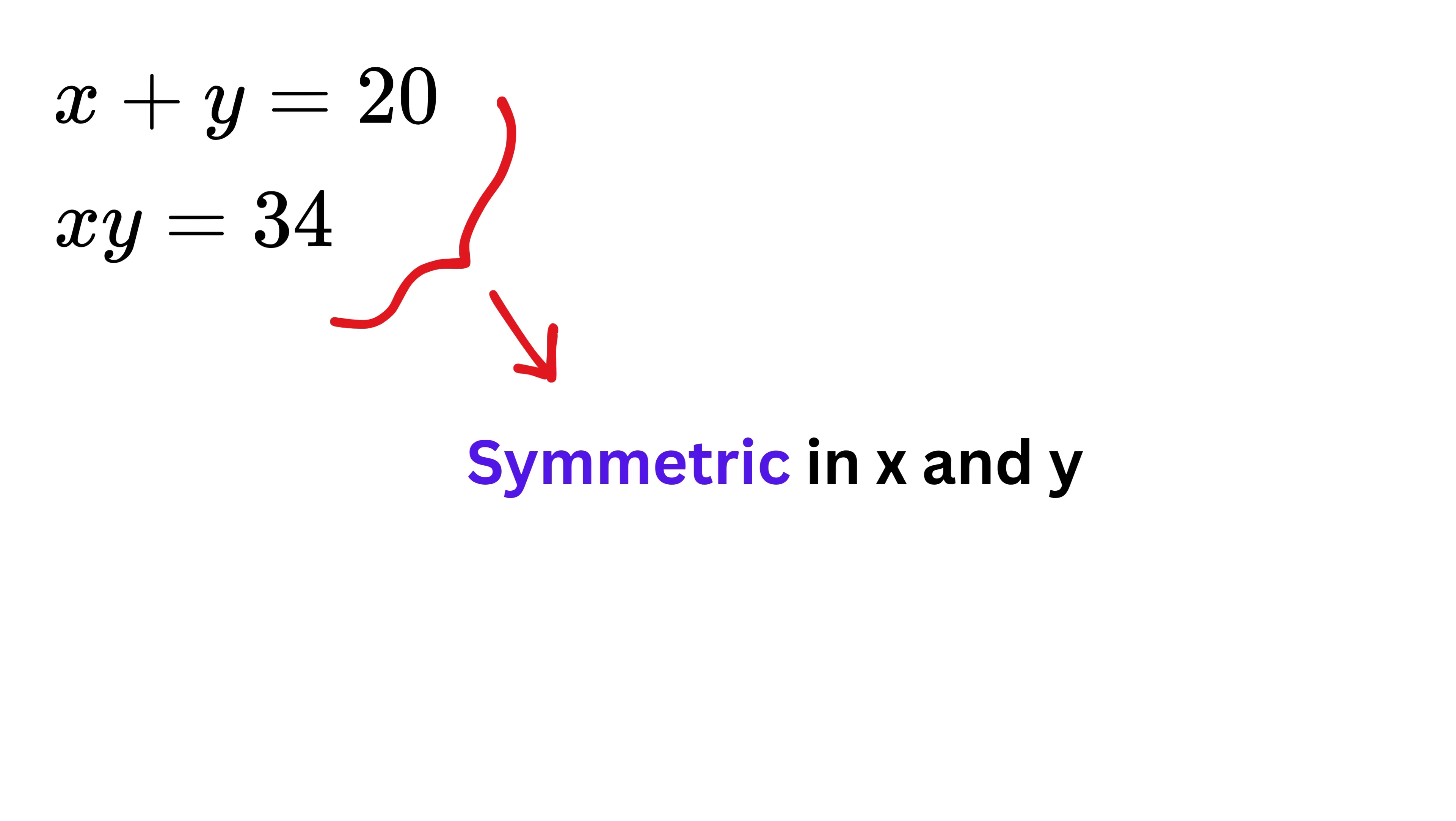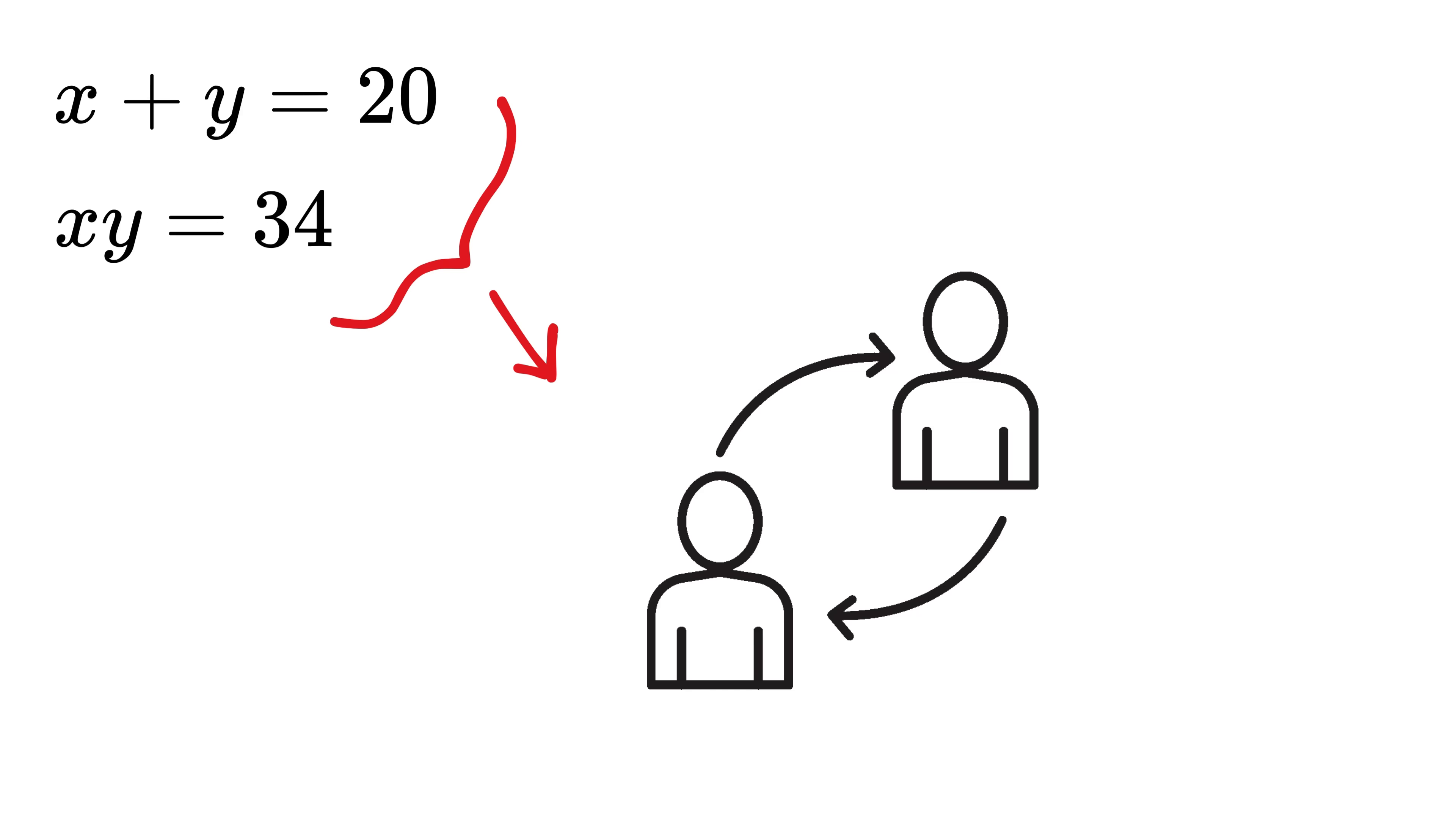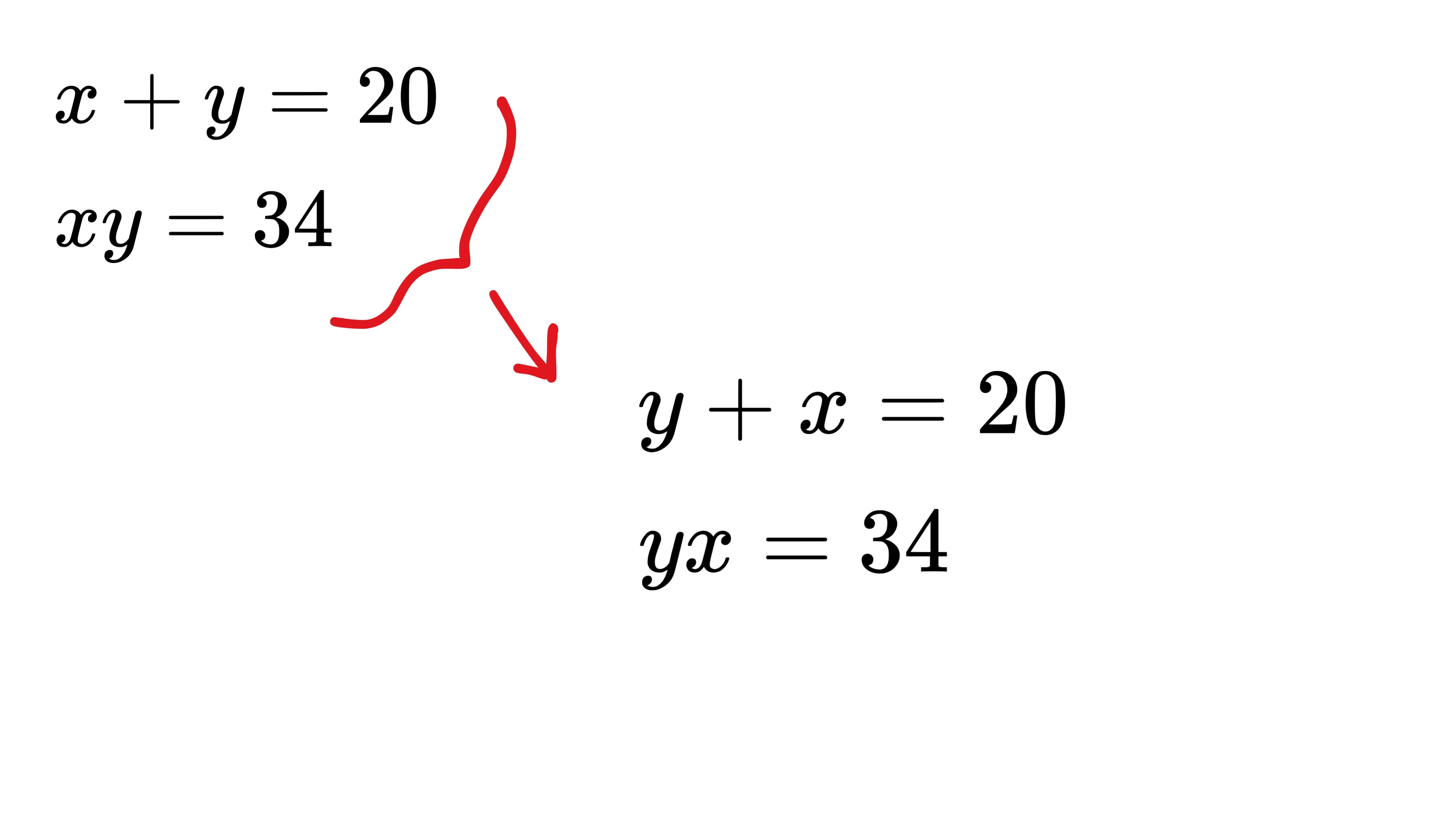If you observe closely, this problem is symmetric in x and y, because x and y play interchangeable roles. So if you write y plus x equals 20 and yx equals 34, the problem still remains the same.